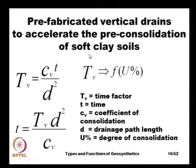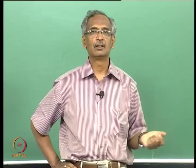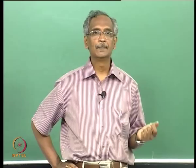Another major application of geosynthetics is in the form of prefabricated vertical drains (PVDs), used for accelerating the consolidation of soft soils. The time factor T_v is a function of the coefficient of consolidation, the drainage path length d, and time t. The time t is directly proportional to the square of the drainage path length and inversely proportional to the coefficient of consolidation. The only parameter we can change to reduce consolidation time is the drainage path length d.